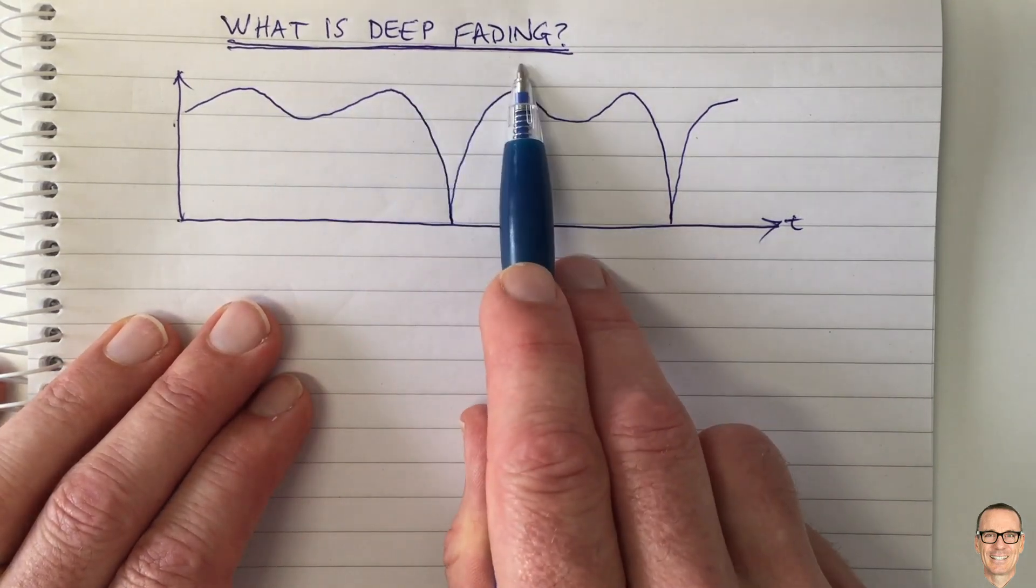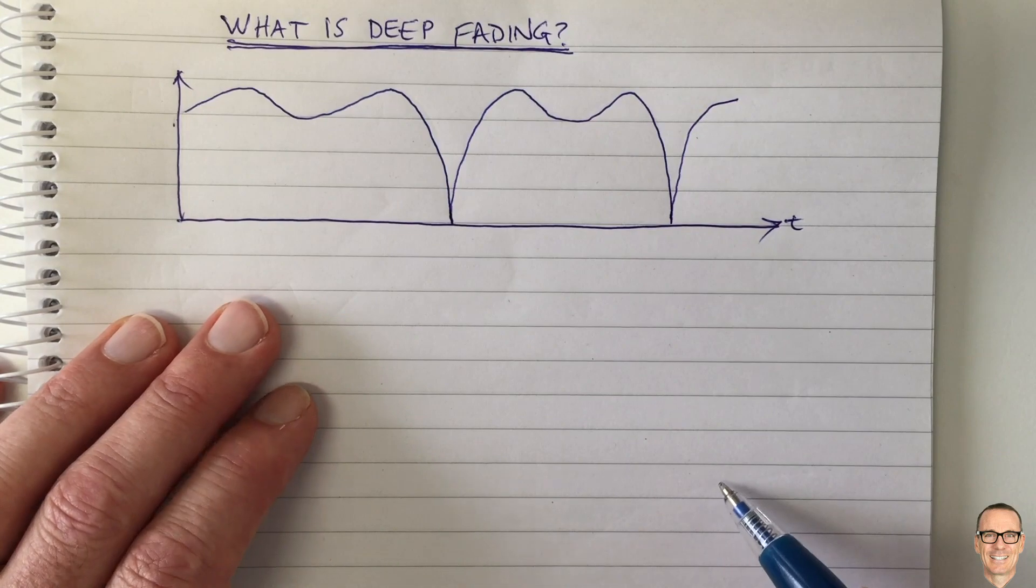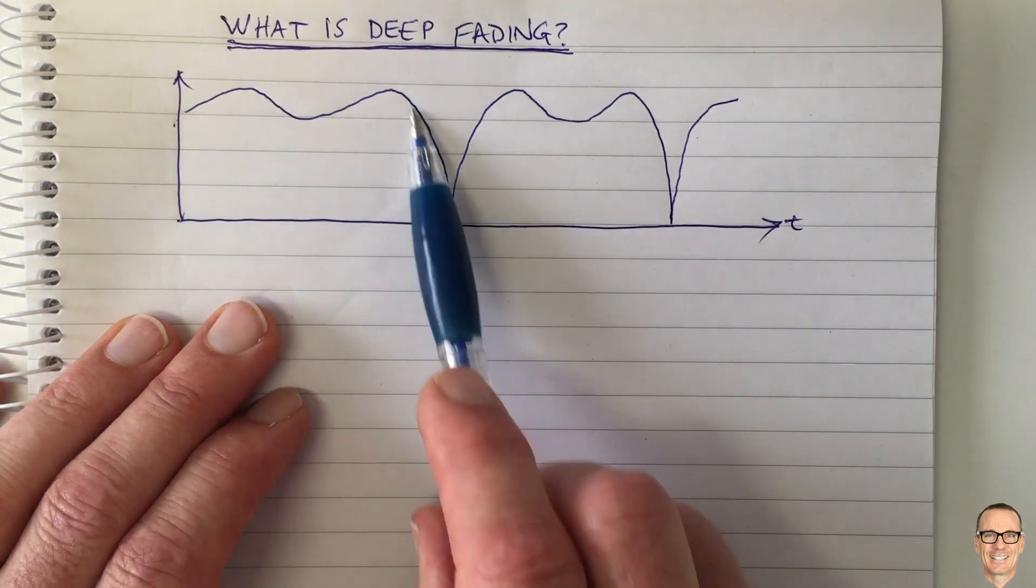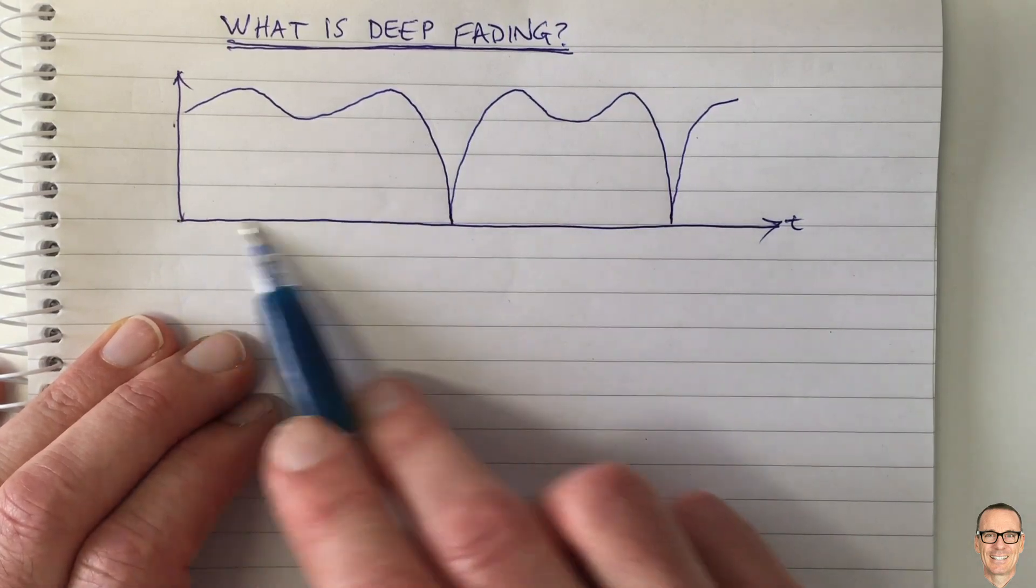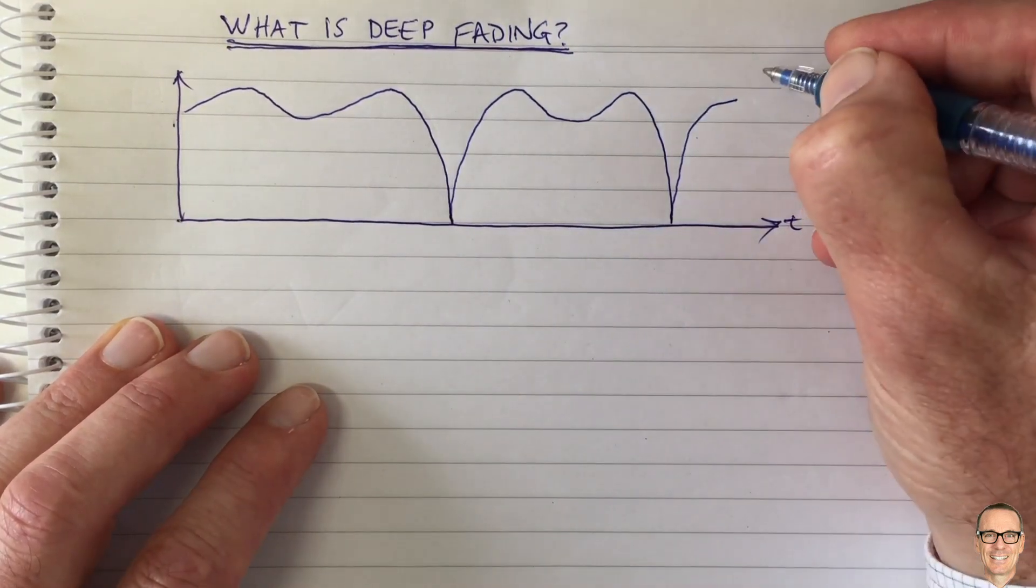So what is deep fading in digital communication systems? And we're often shown a picture like this, which is the channel gain over time of a fading channel.